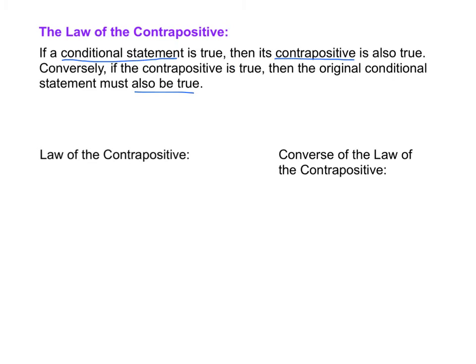We can put this in symbolic terms. The law of the contrapositive essentially says that if P then Q, therefore not Q then not P. And the converse then says, if not Q then not P, therefore P then Q.